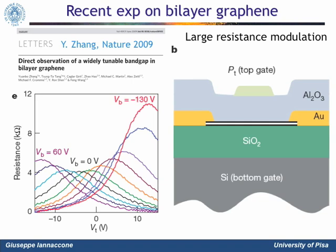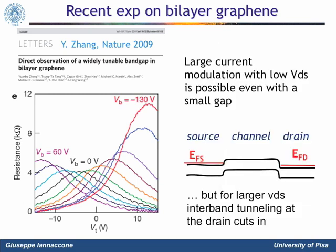I want to stress that this observation does not contradict recent experiments in Berkeley, in which a large conductance modulation is observed in a bilayer graphene FET structure. The fact is that this experiment is performed in a quasi-linear region when the drain-to-source voltage is very small, and in this case inter-band tunneling can be completely inhibited. However, in digital applications the drain-to-source voltage has to be equal to the gate voltage sweep range, which must be at least 0.4-0.5 volts to have a reasonable ION over IOFF ratio with conventional FETs.